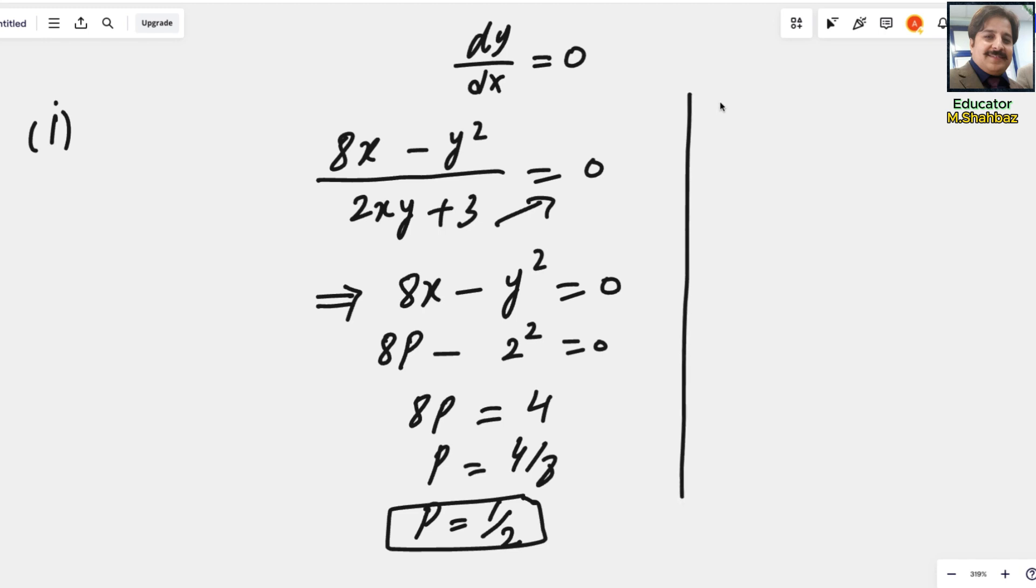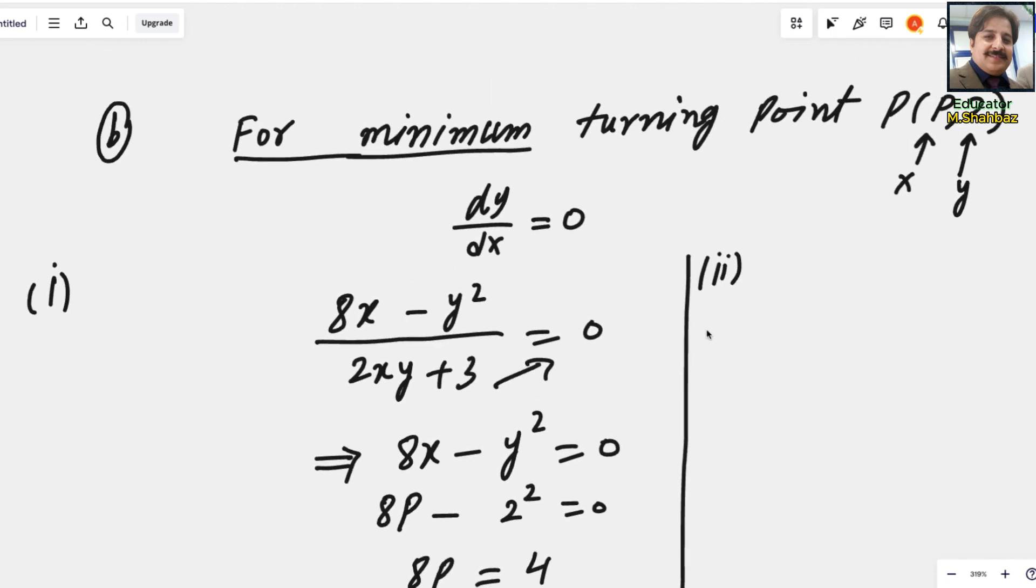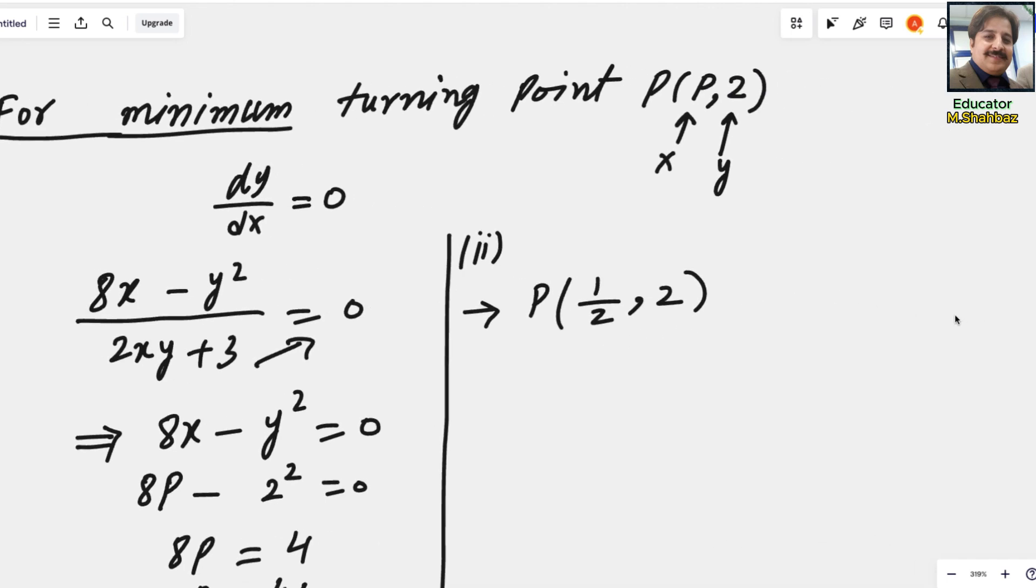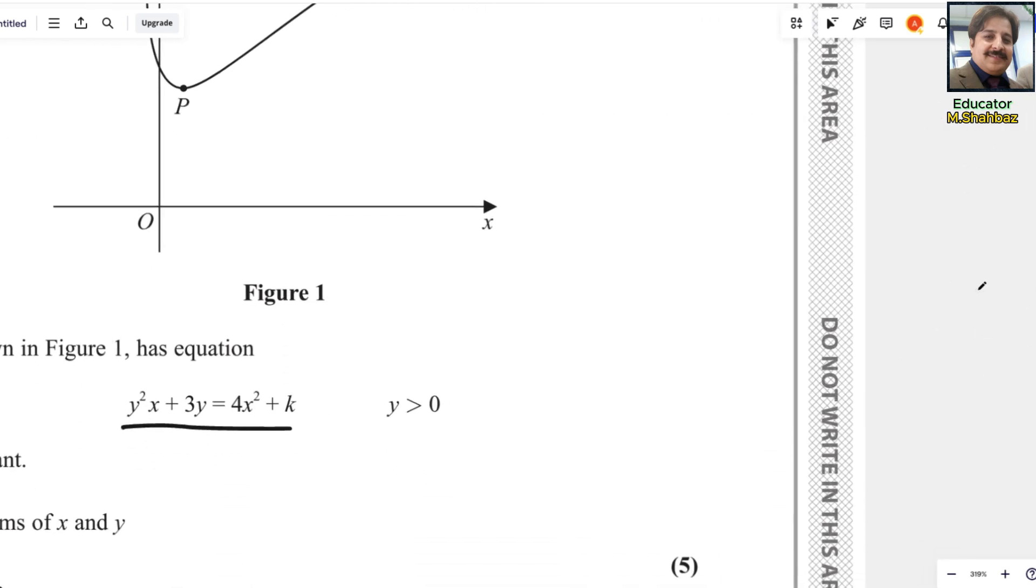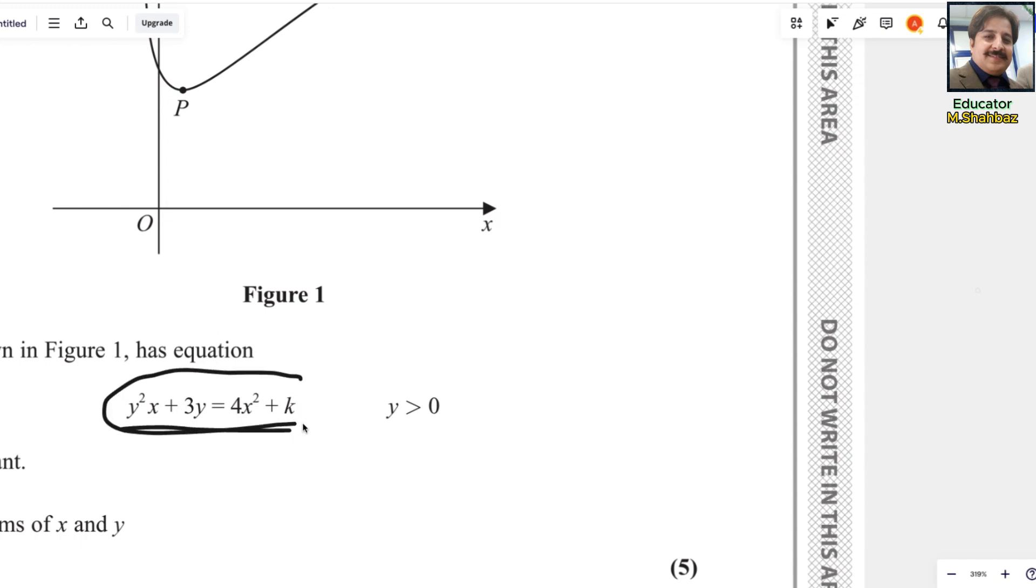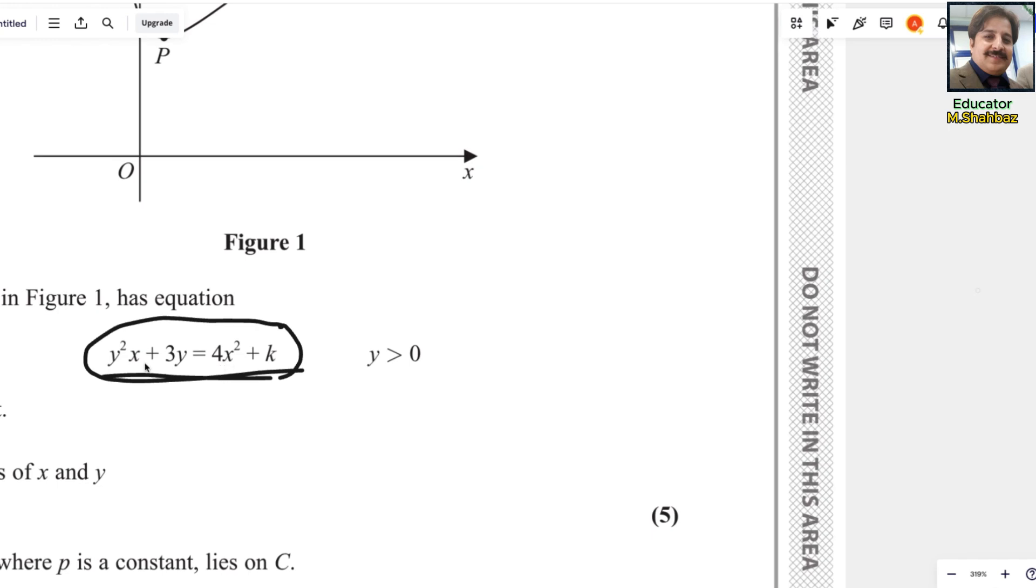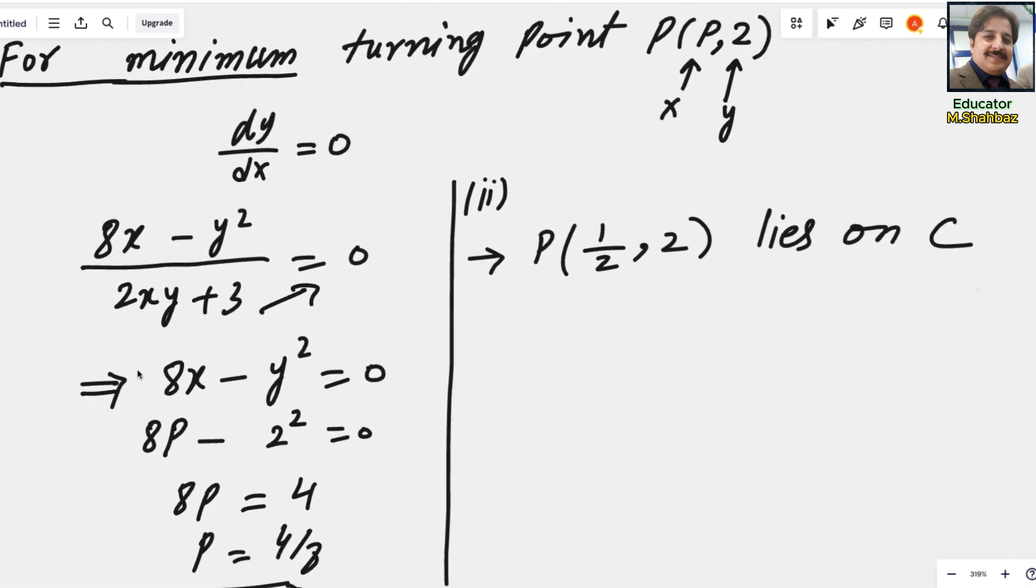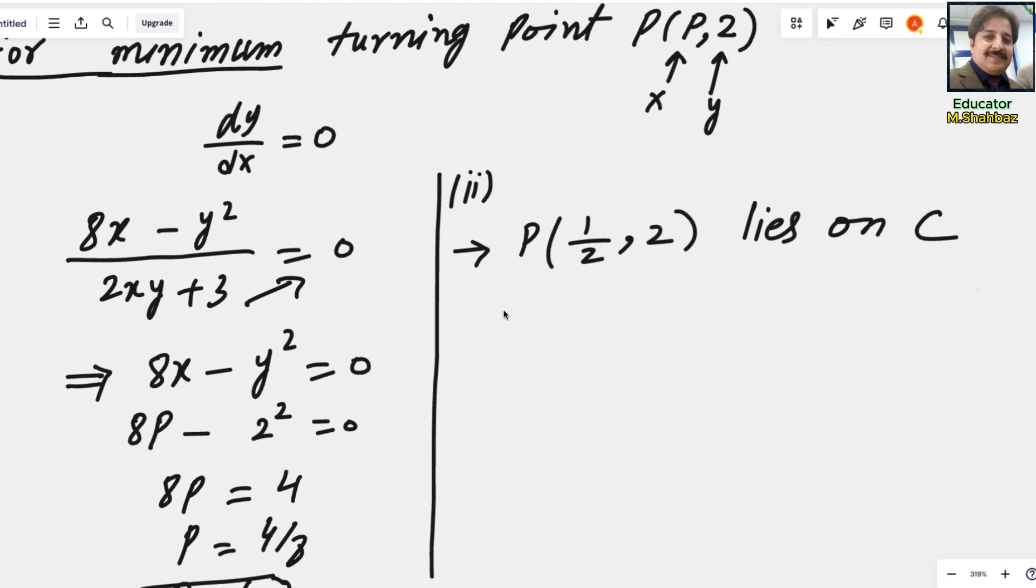For the second part, we got the value. You know that now the coordinates of P are 1/2 and 2. This lies on C. What is C? C is this equation, the equation of this curve. To get the value of k, we have to use the values of x and y. So it equals y²x + 3y = 4x² + k.